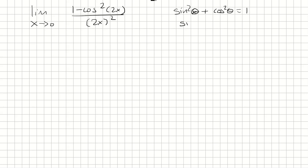So sine squared is equal to 1 minus cosine squared. And if we let theta equal to 2x, we have sine squared 2x is equal to 1 minus cosine squared 2x.